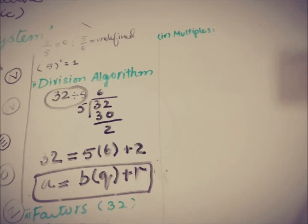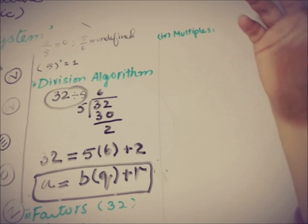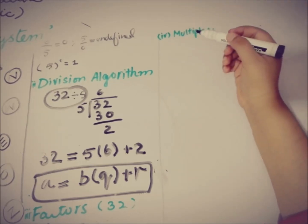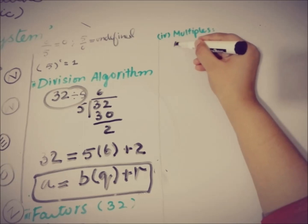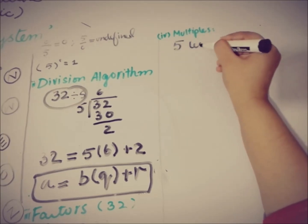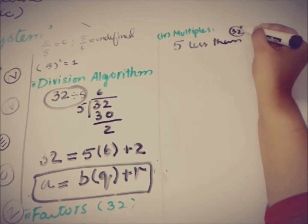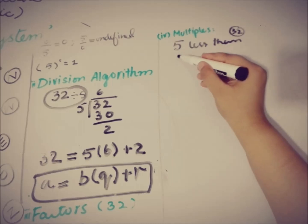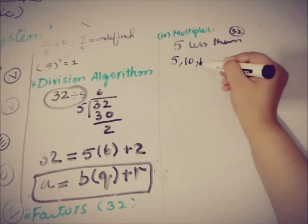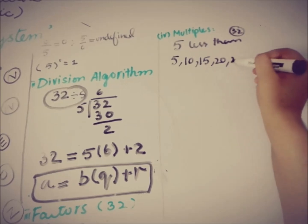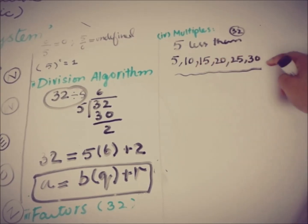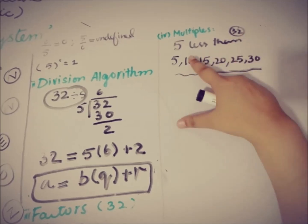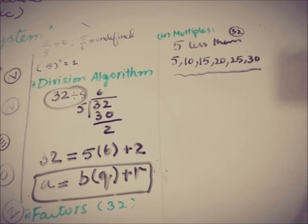Now let's talk about multiples. Finding multiples is just about recalling the multiplication table. For example, finding the multiples of 5 that are less than 32: 5, 10, 15, 20, 25, 30 — and then 35 exceeds 32, so we stop. That gives us 6 multiples of 5 that are less than 32. We can find multiples of any number within any given restriction.